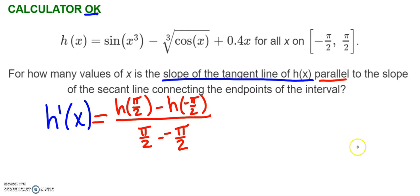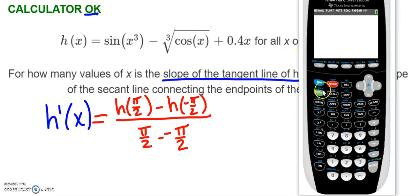So thinking about this for our calculator, I have in my y equals, I have my h(x). So I'm going to find h(π/2). We're just going to trace at π/2, and I end up with -0.402.